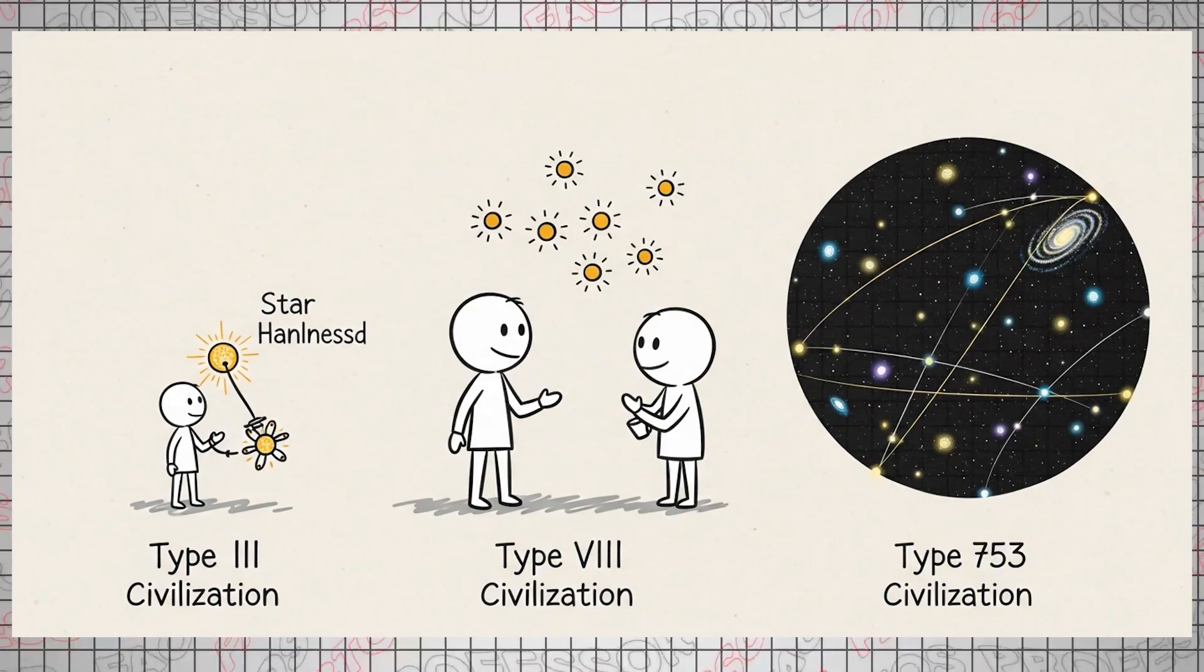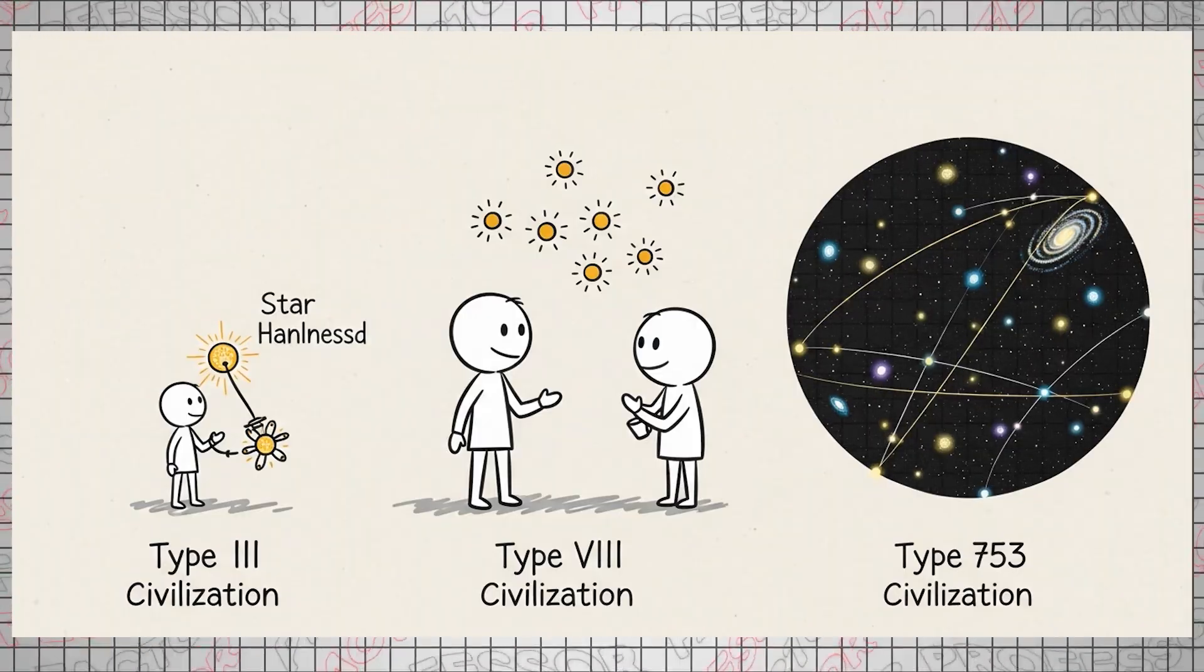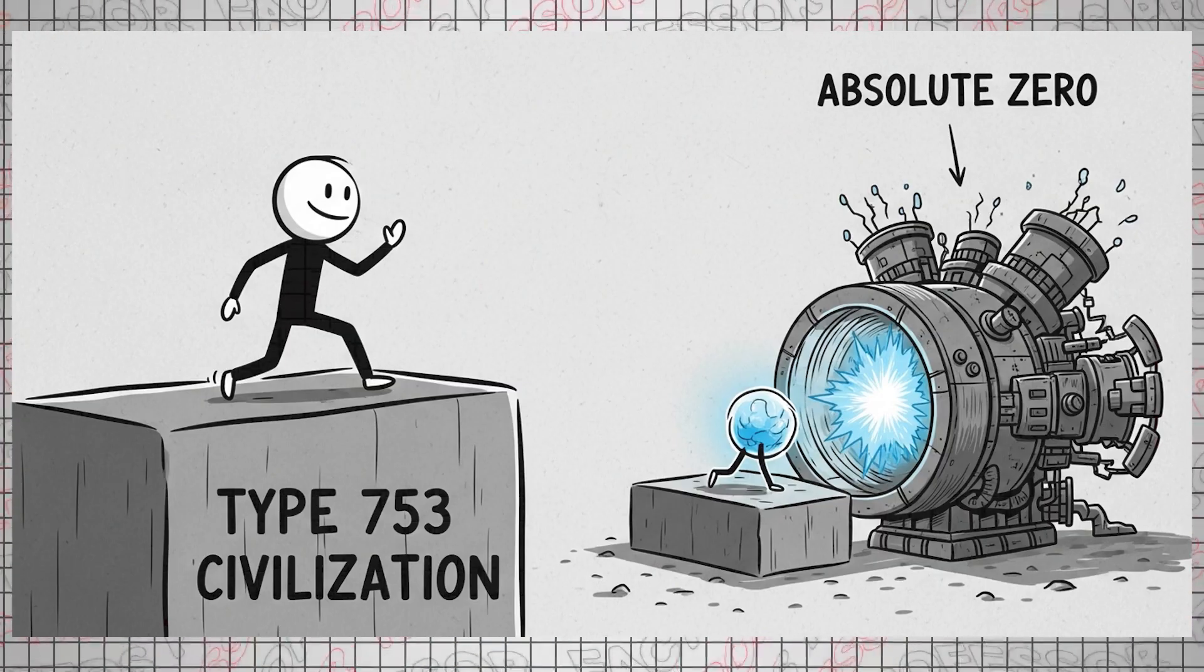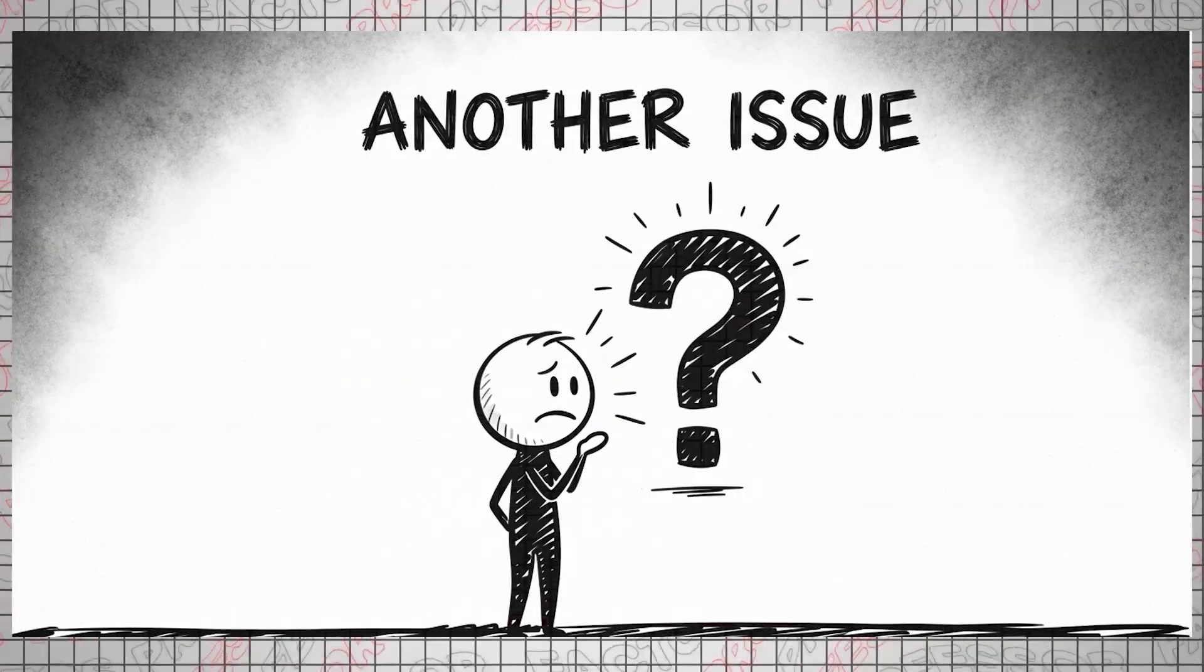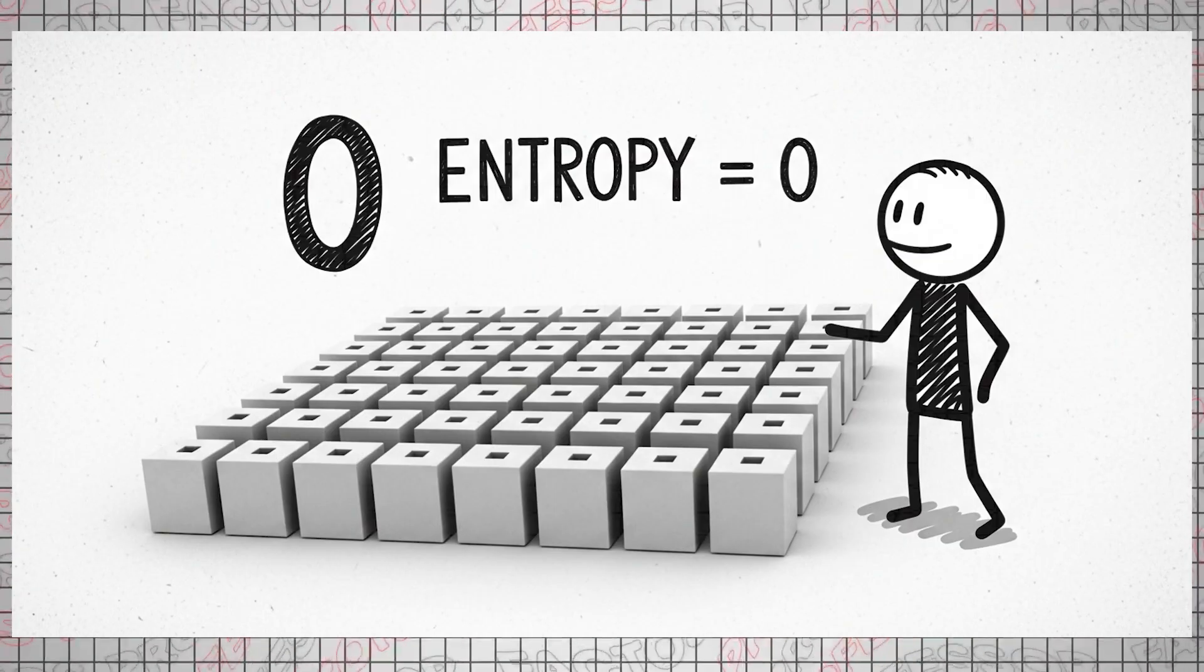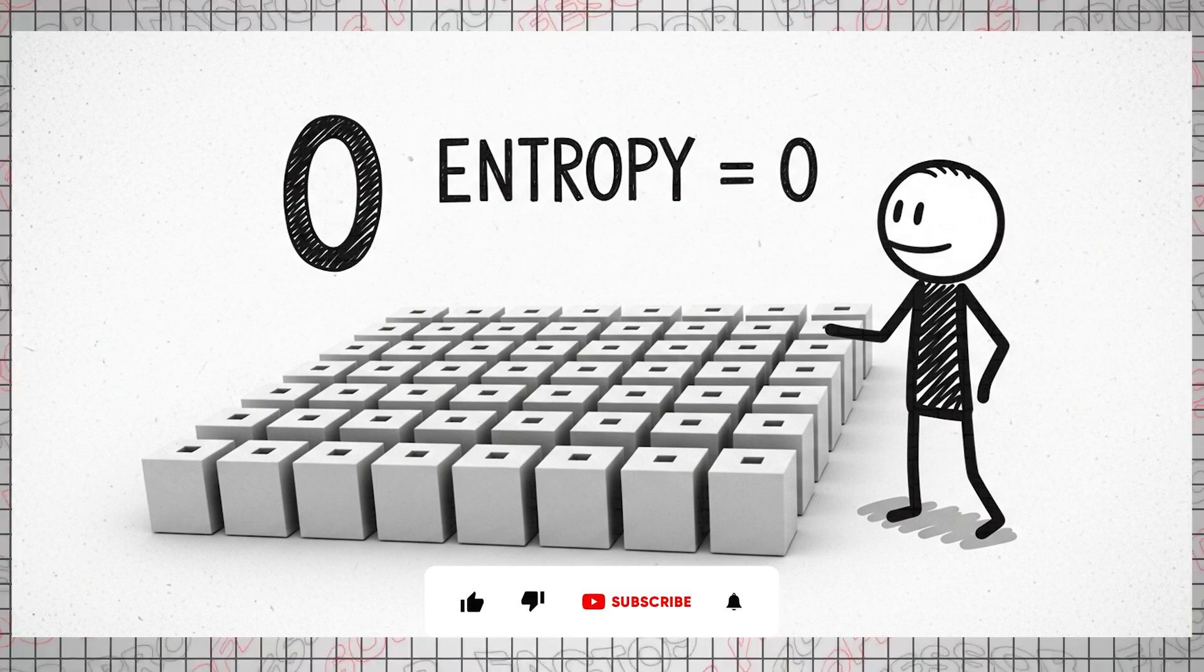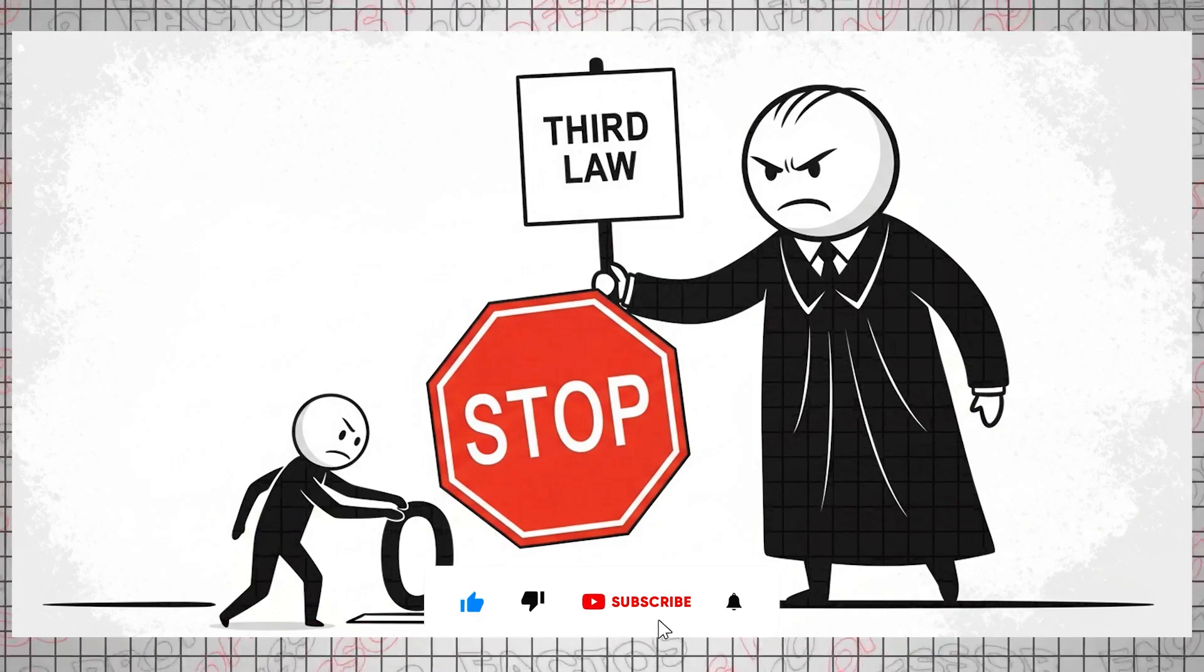According to the principles of thermodynamics, you would require an infinite amount of energy to cool something down to absolute zero. To put it into perspective, becoming a type 3, type 7, or even a type 753 civilization is easier than creating absolute zero.